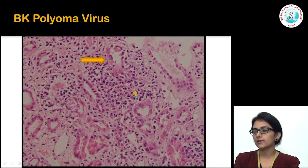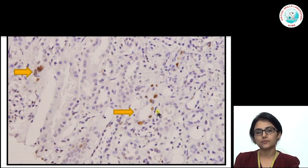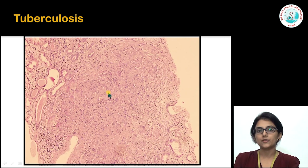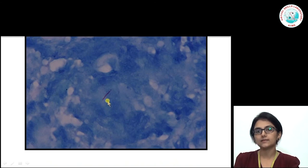A brick-red nuclear inclusion is characteristic of BK polyomavirus infection, which is most important in the transplant setting. Antigen immunostaining is used to highlight this infection in the tubules. In a country like India, TB is still prevalent and a granulomatous response can be seen in the tubulointerstitium in patients infected with renal tuberculosis. On Ziehl-Neelsen staining, demonstration of acid-fast bacilli confirms the diagnosis.